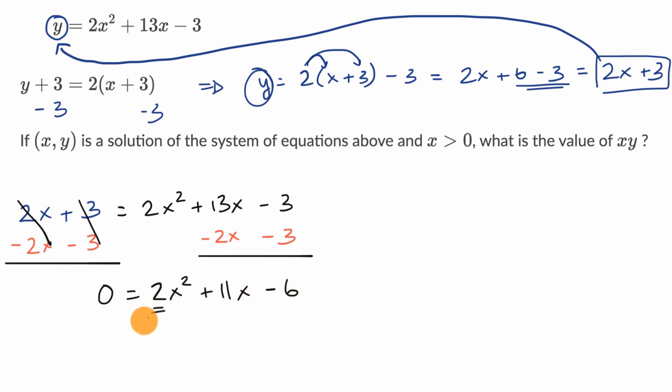So the quadratic formula tells us if this is of the form ax squared plus bx plus c, we could see that two is equal to a, 11 is equal to b, and c is equal to negative six. And so the quadratic formula is negative b plus or minus the square root of b squared minus four ac, all of that over two a.